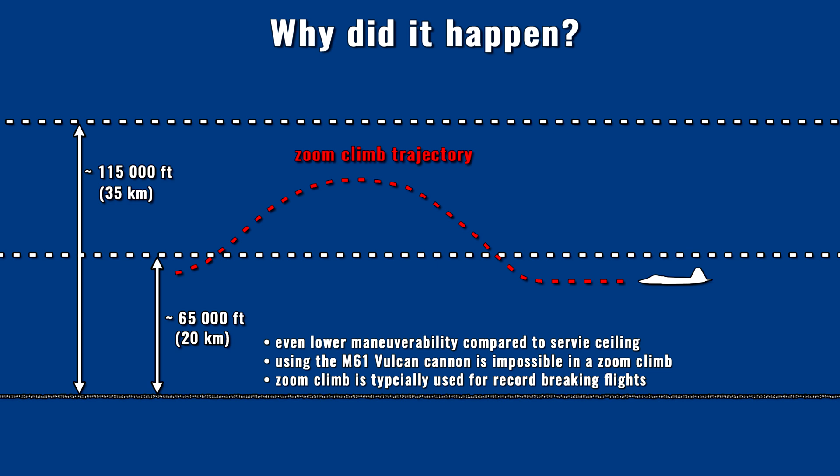In a zoom climb, a fighter at around 40,000 feet accelerates to top speed — up to Mach 2 or even higher. At that altitude the plane is well maneuverable and can execute a steep climb. Using this quasi-ballistic trajectory, the airplane can surpass its maximum ceiling. In extreme cases, the peak of such a trajectory can exceed 100,000 feet. Zoom climb was typically used for absolute altitude record-breaking flights.